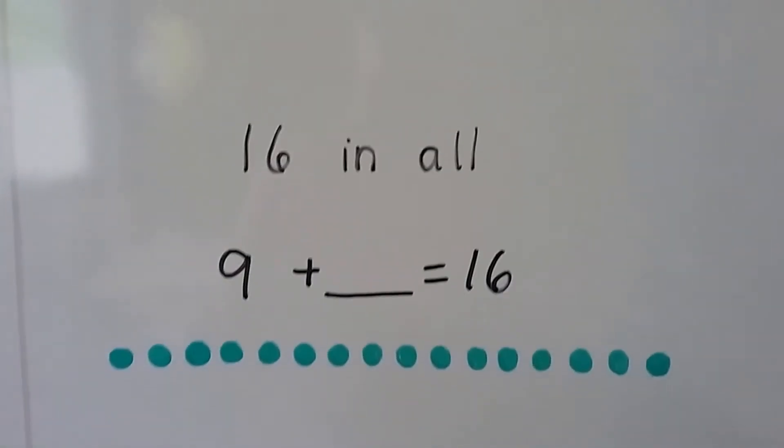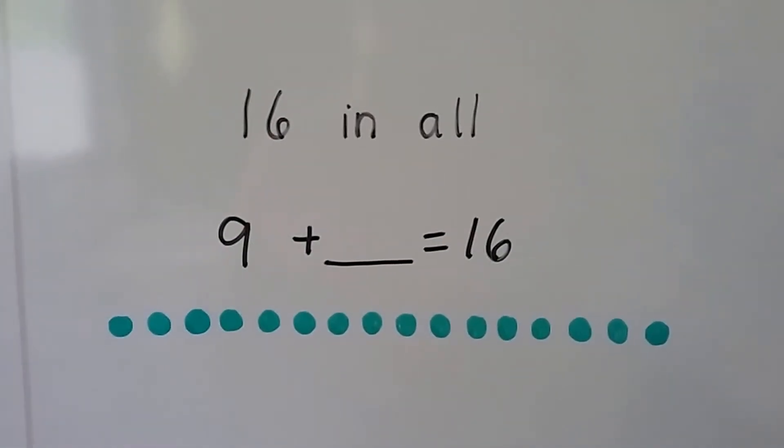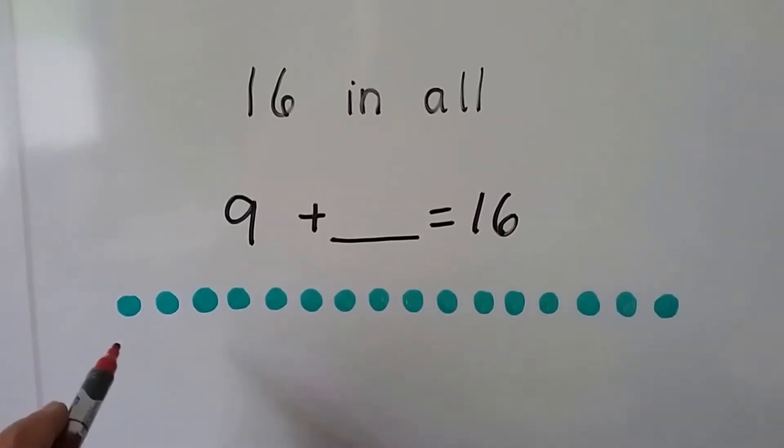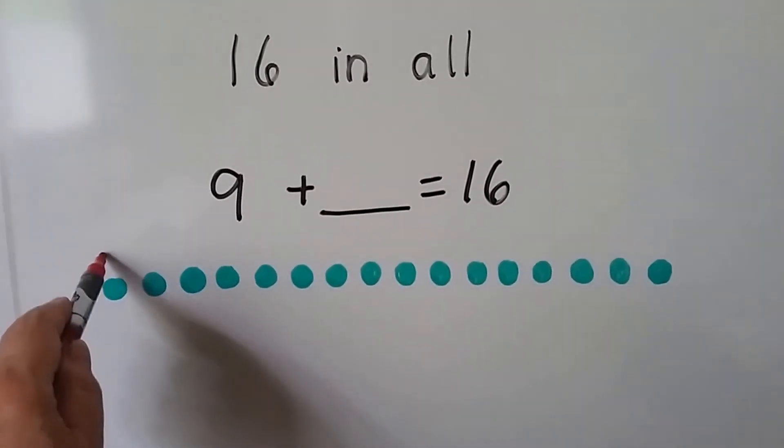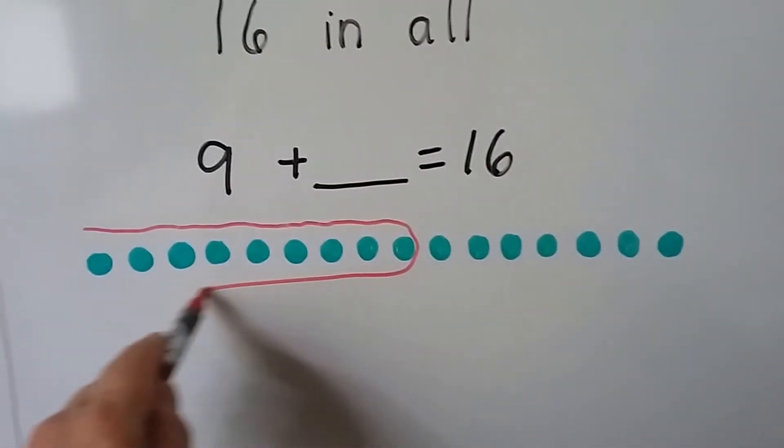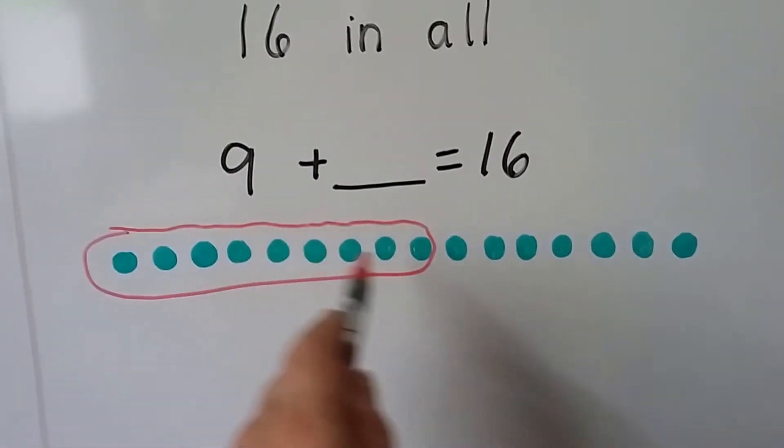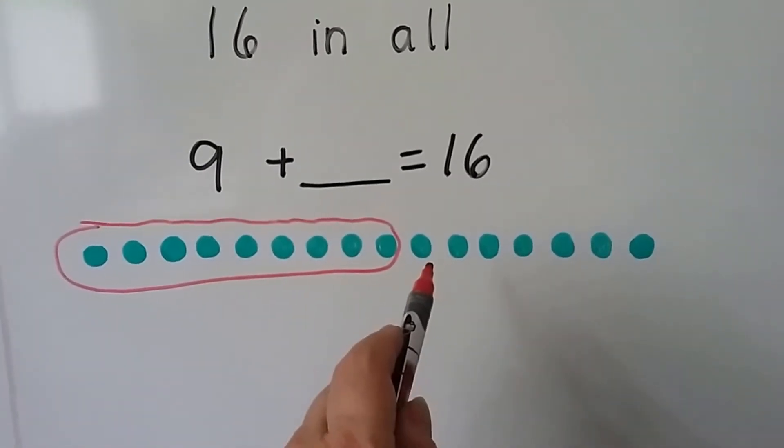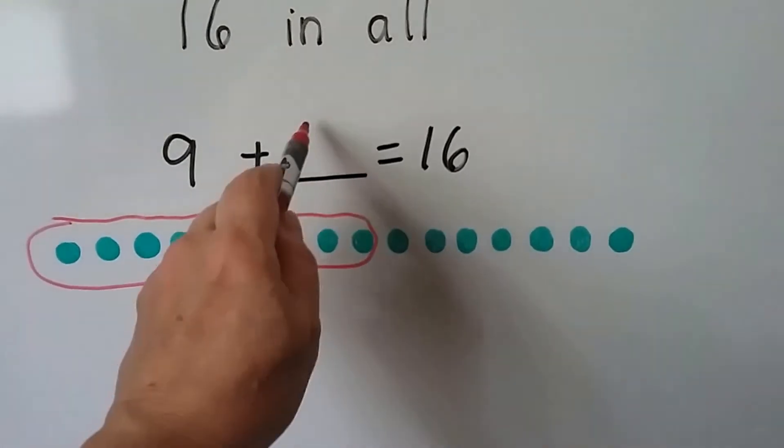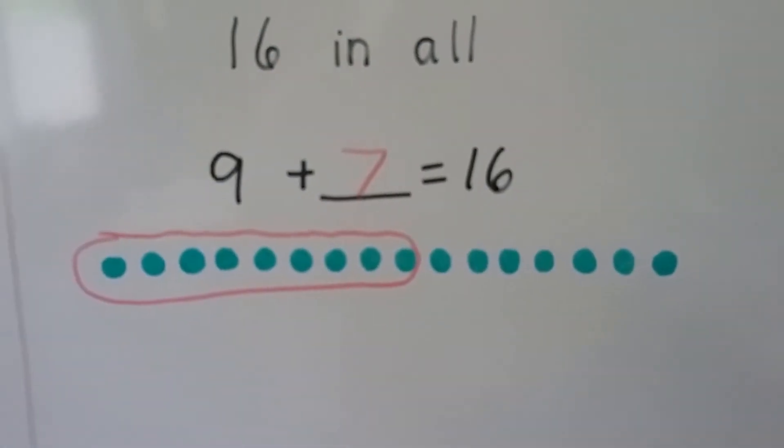Let's try it again. We need 16 in all. 9 plus something equals 16. So let's circle 9 of them right away: 1, 2, 3, 4, 5, 6, 7, 8, 9. So now we separated the 9 away from it. Let's see how many are left: 1, 2, 3, 4, 5, 6, 7. So 9 plus 7 equals 16.